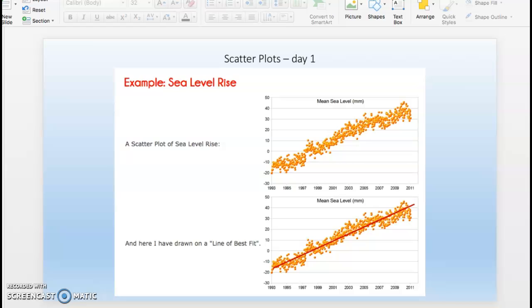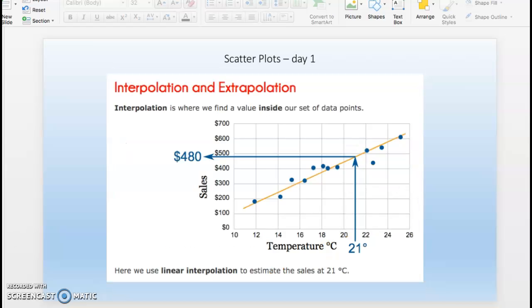There's also two vocabulary words. Interpolation is where you find a value that's inside the set of data points using the line of best fit. In this case, the sales at 21 degrees, you just go right up to our line of best fit and it says okay, about $480, just to estimate what our sales would be.